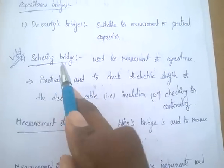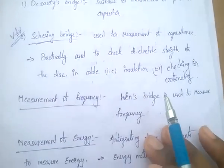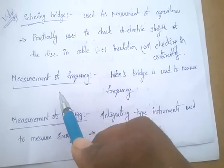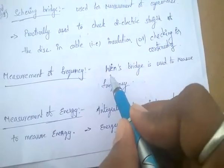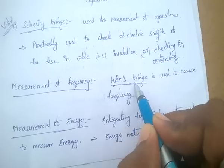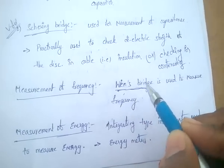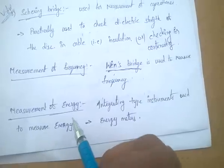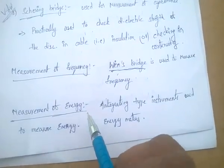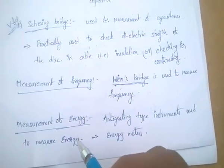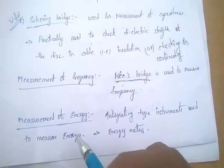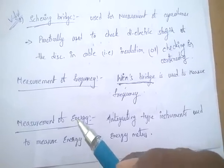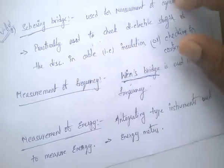For measurement of frequency, Wien's bridge is used — it is a very, very important point. Wien's bridge is used to measure frequency. For measurement of energy, integrating type energy meters are mainly used.